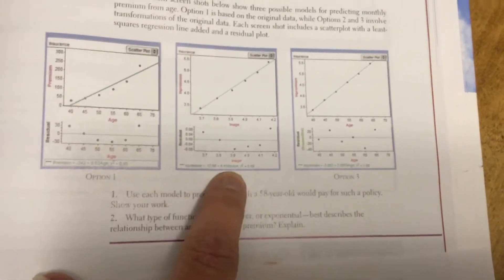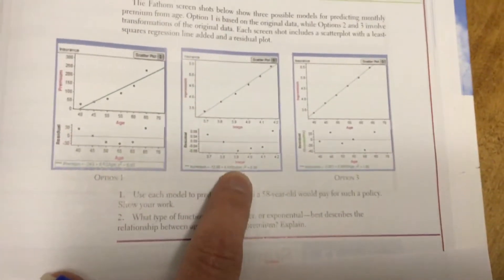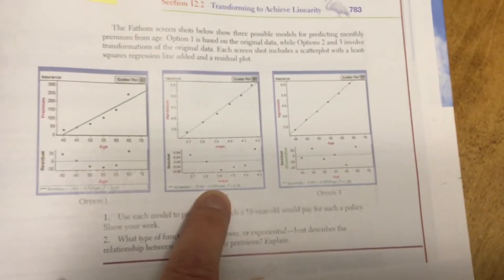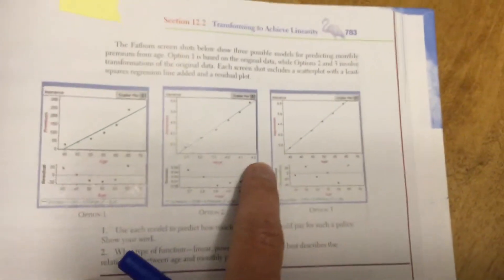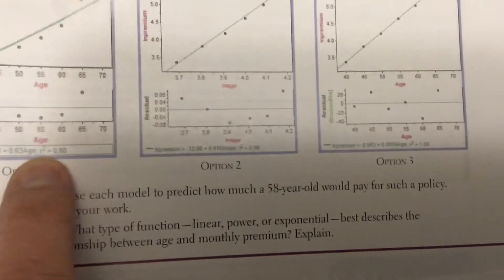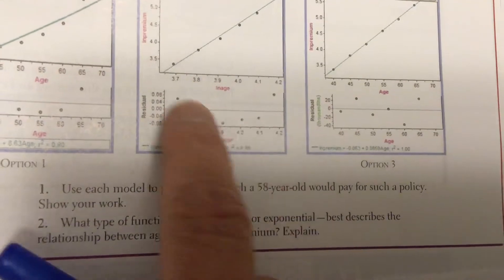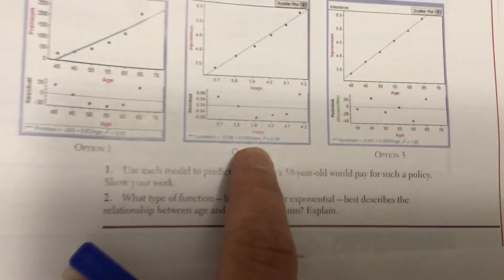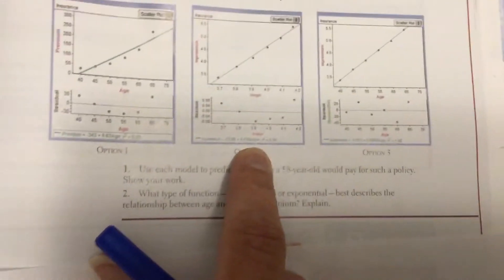I've got another least squared regression line, not just premium and age, but natural log of premium and natural log of age. But my residual still, oh wait, the coefficient of determination is getting stronger. So it's 0.99 as opposed to the 0.9 over here. But my residual still has a pattern. So maybe it won't be the best regression.